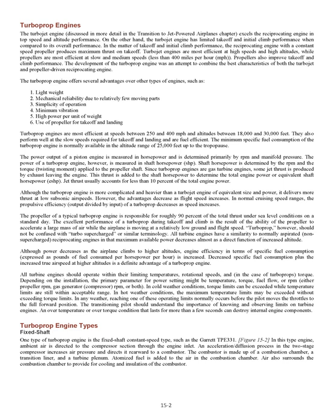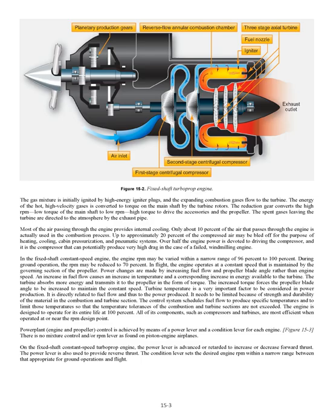Turboprop Engine Types: Fixed Shaft. One type of turboprop engine is the fixed shaft constant speed type, such as the Garrett TPE 331. In this type engine, ambient air is directed to the compressor section through the engine inlet. An acceleration/diffusion process in the two-stage compressor increases air pressure and directs it rearward to a combustor made up of a combustion chamber, a transition liner, and a turbine plenum. Atomized fuel is added to the air in the combustion chamber, and air also surrounds the combustion chamber to provide cooling and insulation. The gas mixture is initially ignited by high-energy igniter plugs, and the expanding combustion gases flow to the turbine. The energy of the hot, high-velocity gases is converted to torque on the main shaft by the turbine rotors. The reduction gear converts the high RPM, low torque of the main shaft to low RPM, high torque to drive the accessories and the propeller. Most of the air passing through the engine provides internal cooling; only about 10% is actually used in the combustion process.